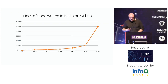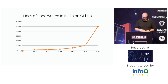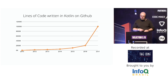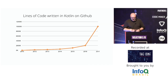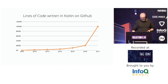This chart shows the number of lines of Kotlin code on GitHub in recent years. We can see how much it is growing, mostly because of Google's announcement of Kotlin as one of the officially supported languages for Android development. But Android is not the only field where Kotlin is gaining momentum.